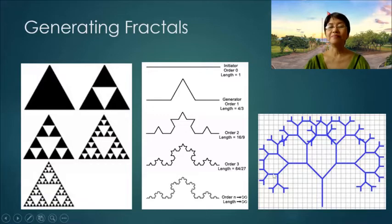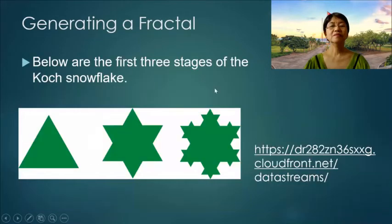Below are the first three stages of the Koch snowflake.